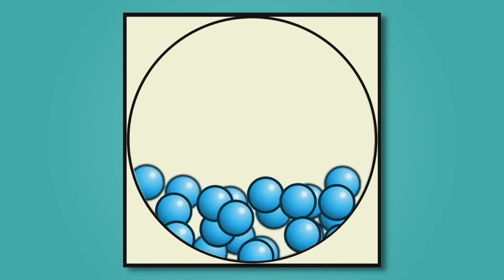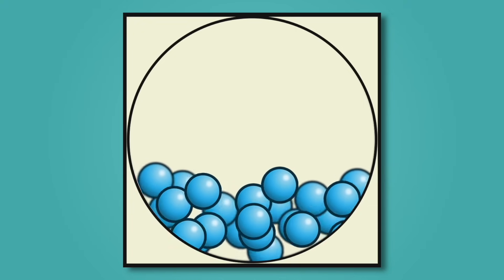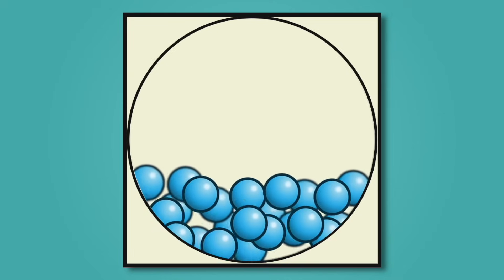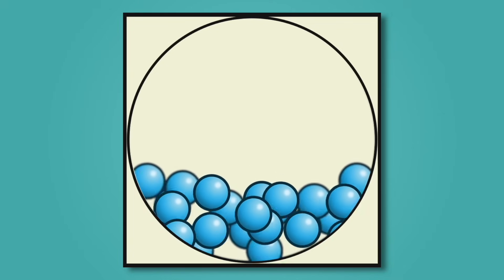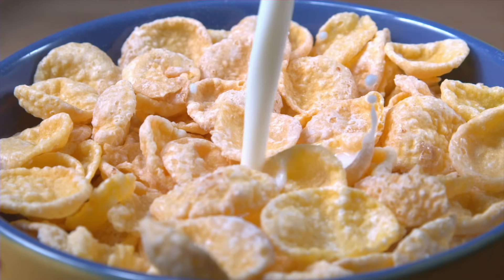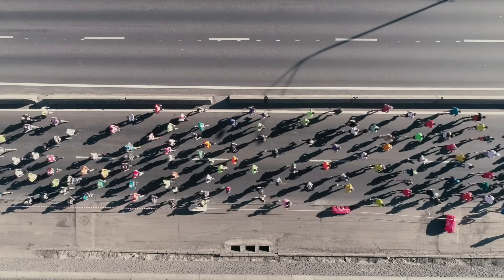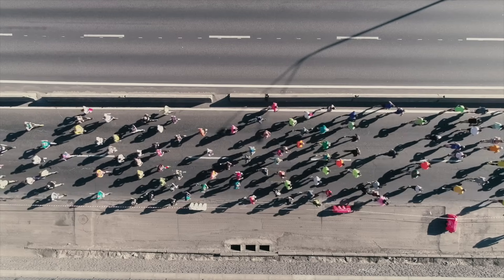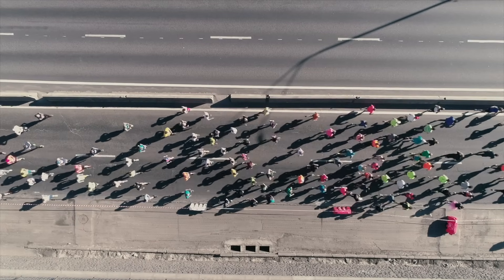This is because the atoms in a liquid are more loosely packed than a solid. Because the atoms are more spread out, they can move faster, and they're able to slide past each other. This is what allows a liquid to flow and be poured, like when you pour milk into your cereal bowl. If solids are like a crowded elevator, then liquids are kind of like a race. It's still pretty crowded, but people are able to pass each other or fall behind. And they are definitely moving faster than those people stuck in the elevator.